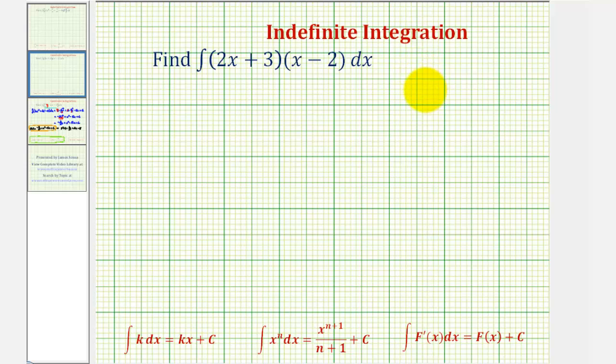Let's go ahead and do this on the side. We would have two x plus three times x minus two. So we'll have one, two, three, four products. We'll have two x to the second minus four x plus three x minus six.